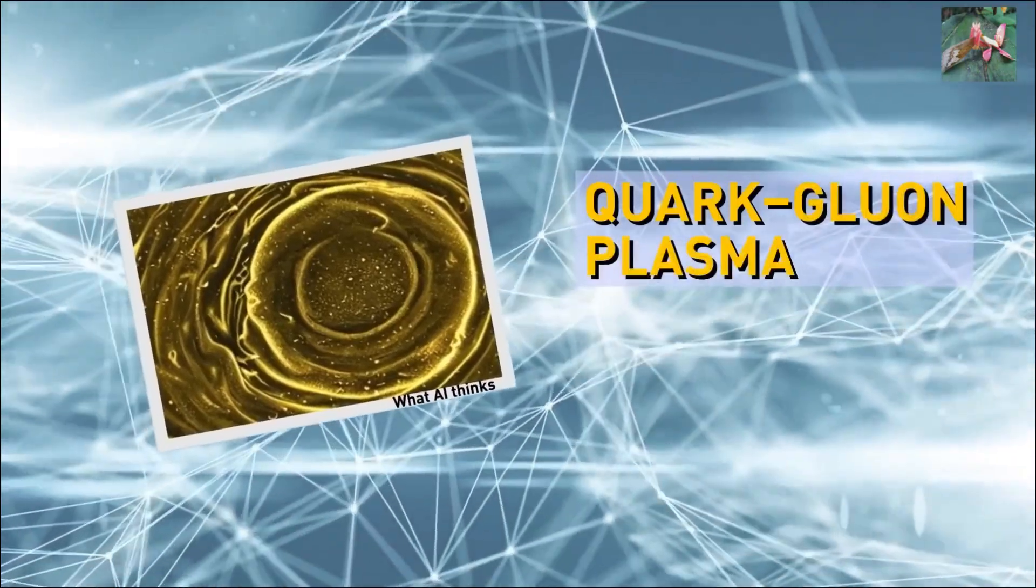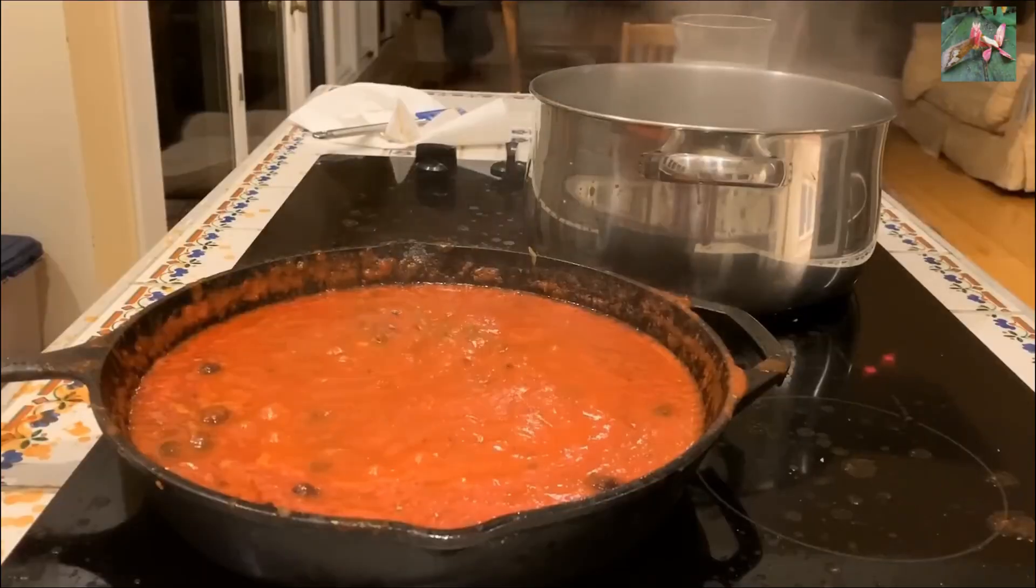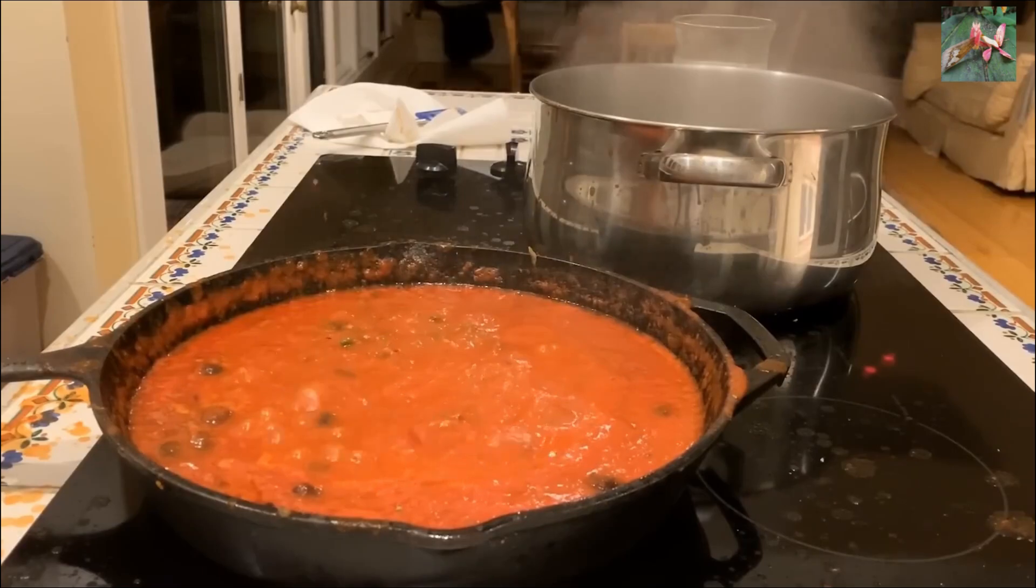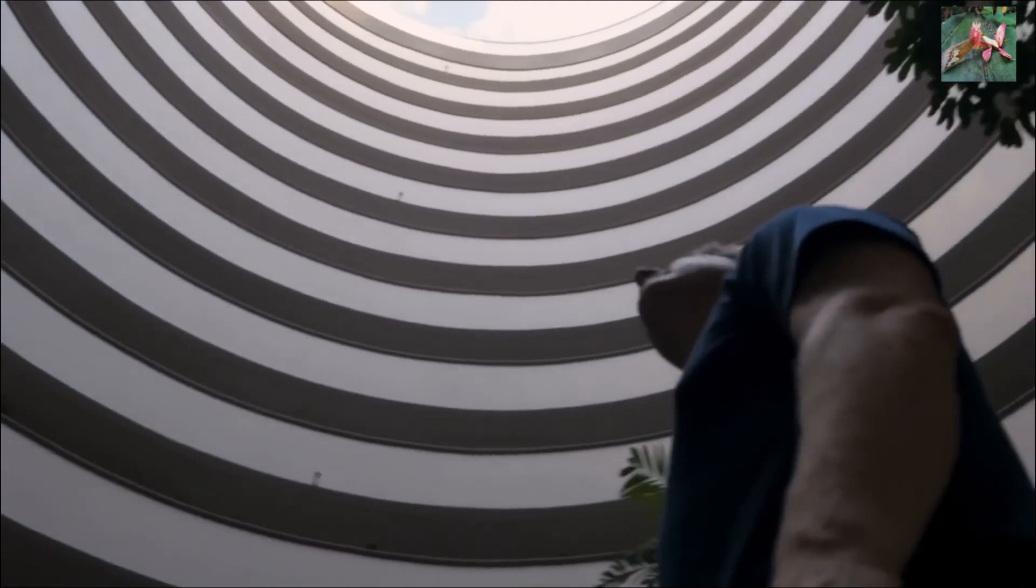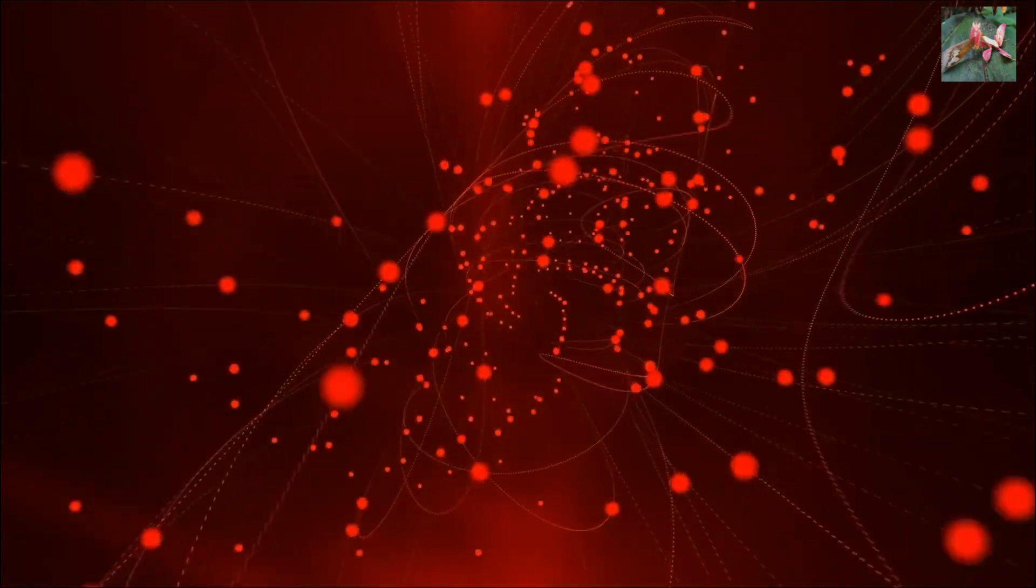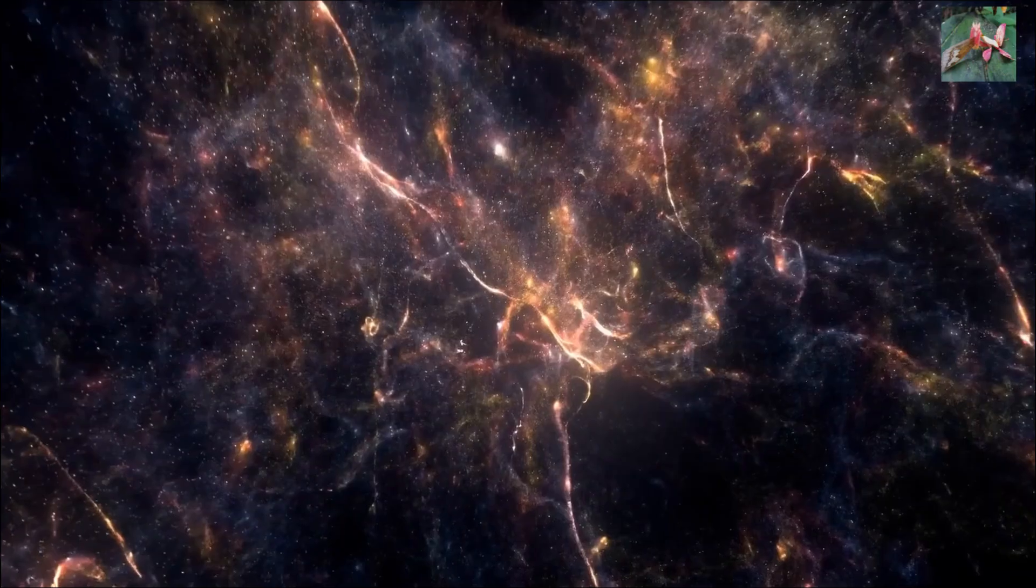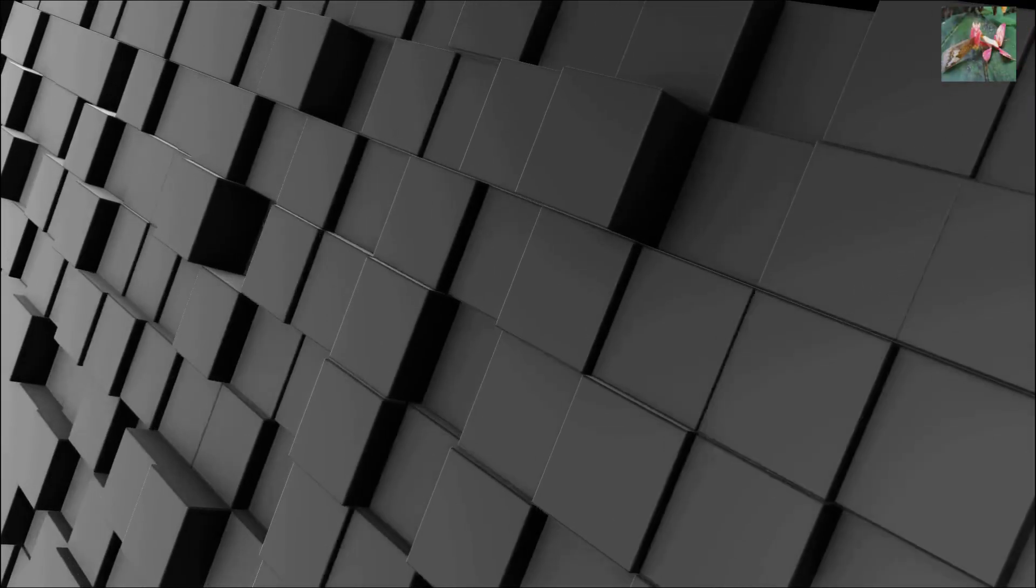First, we have quark-gluon plasma. This state of matter looks like a hot and soupy mess. It's a bizarre state that existed just moments after the Big Bang, when the universe was incredibly hot and dense. You see, inside all the things around us, there are tiny particles called quarks. And as far as we know, they're the smallest particles of the universe. They're the building blocks of our world.